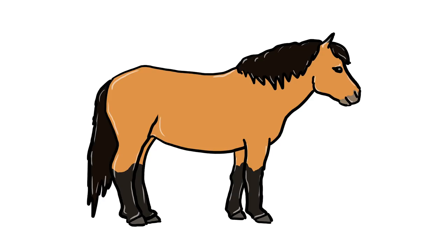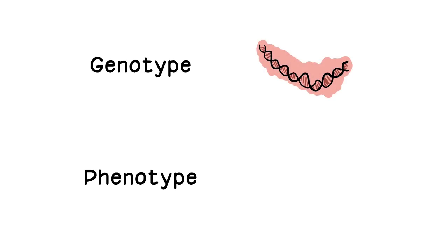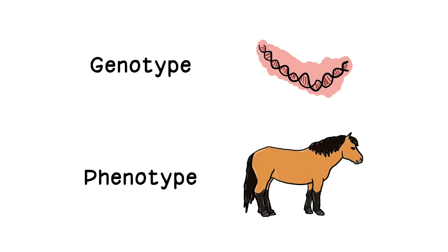Now that we understand what happens in the pigment producing cells, we can go on to see how a horse's genotype influences its phenotype. Genotype is what the genetic code says, and phenotype is what you can actually see on the outside.